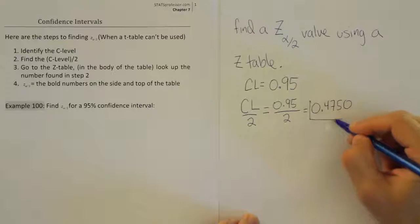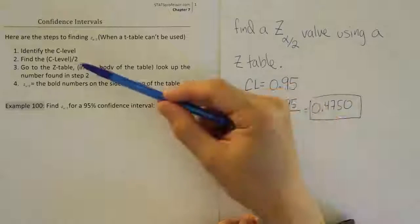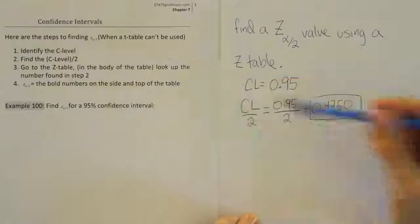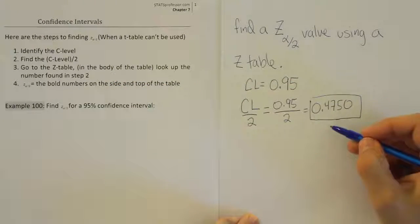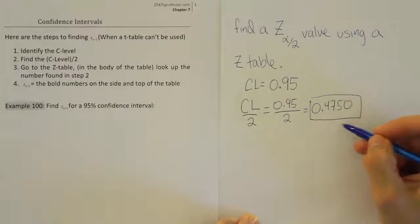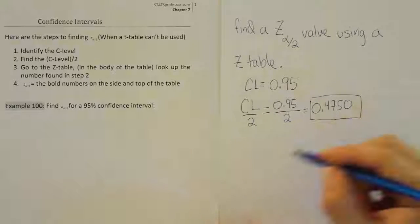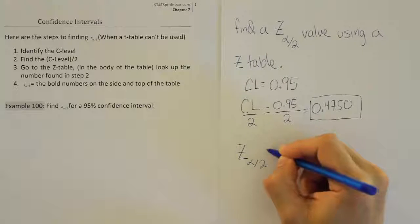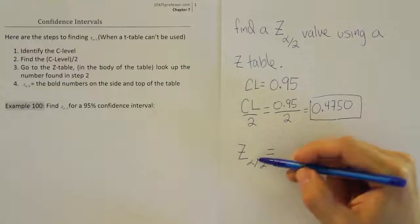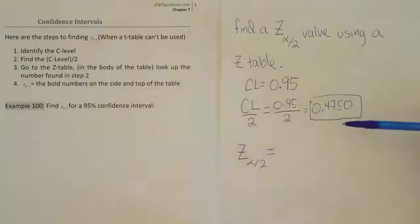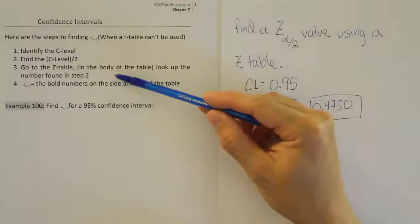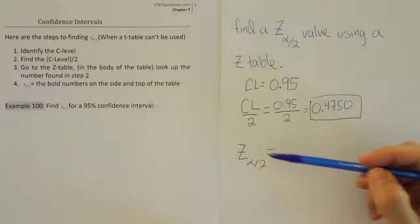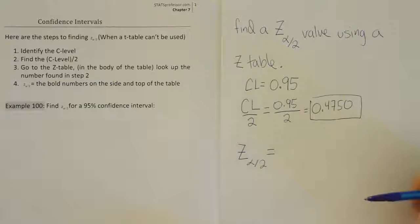So we have this value and that was essentially step two of the process to divide the confidence level in half. Now all we do is we go to our table and we look this value up and that value will correspond to our z alpha divided by 2, the value we're looking for. So this critical z value is going to be found by looking up this 47.50 in the body of the table. That's going to be associated with the proper z score for the problem. So let's go get our z table and take a look at that.